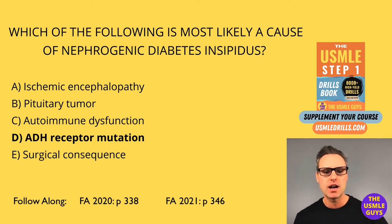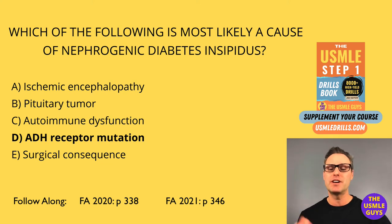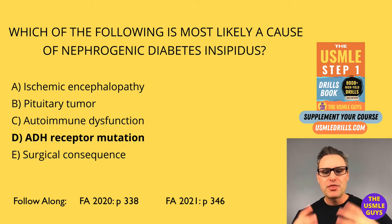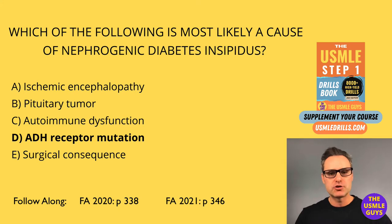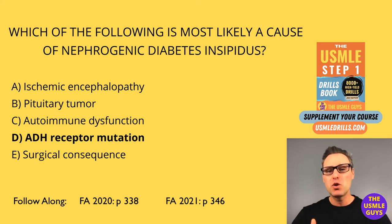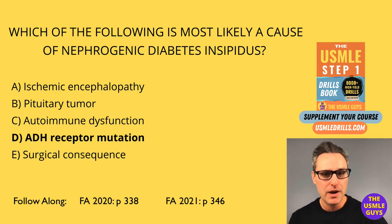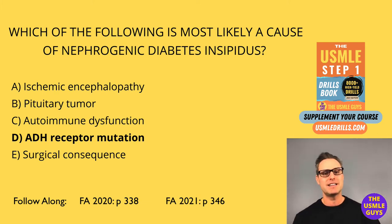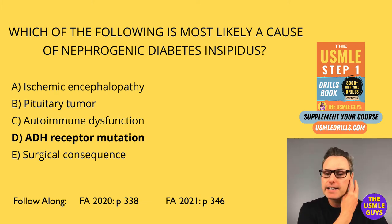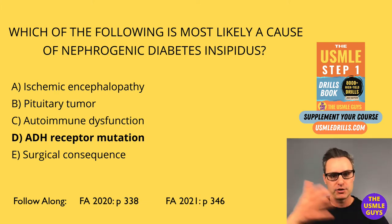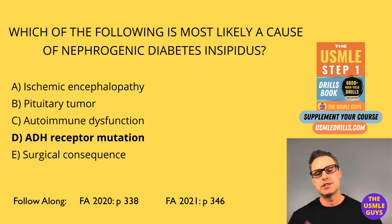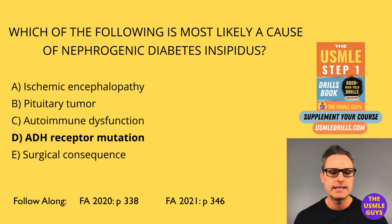When you get a question on this topic, first look at those ADH levels. If they are low, think central — it's in the brain, we're not creating enough. If they're normal or even high, think nephrogenic. That's a real easy way to quickly identify or at least narrow down the diagnosis as being central versus peripheral in the kidneys.